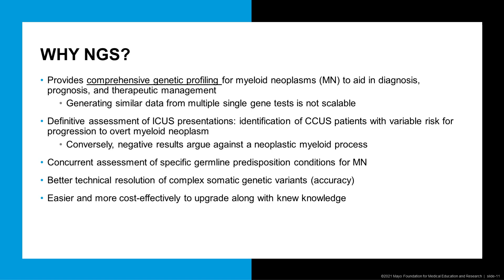In contrast, the presence of a negative result by NGS in a patient with an unexplained cytopenia provides relatively strong evidence against a neoplastic myeloid process. It doesn't completely exclude it, but the probability of having a myeloid neoplasm with a negative NGS assay result and also a normal cytogenetics finding very much argues against the possibility of a myeloid neoplasm — so there's a good negative predictive value in this situation. We can concurrently assess for the possibility of specific germline predisposition conditions, but because our panel is targeted for somatic alterations, if we do find a potential germline alteration of interest, this will have to be called out in the report and may require additional testing to confirm.